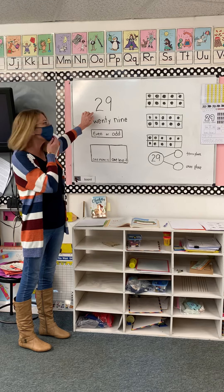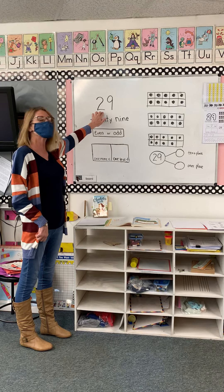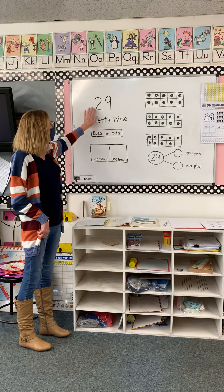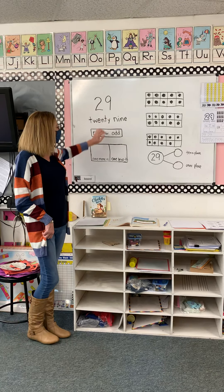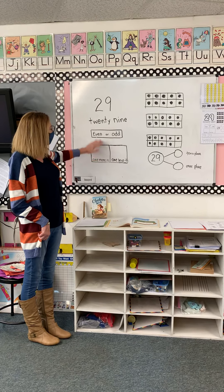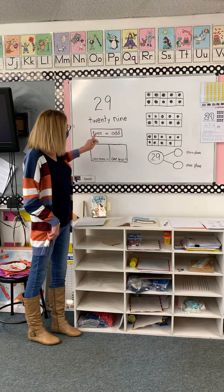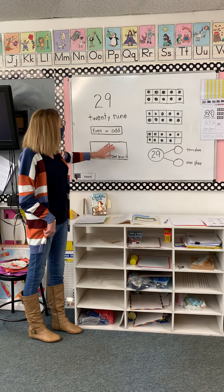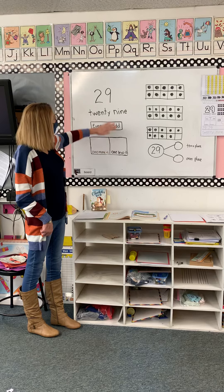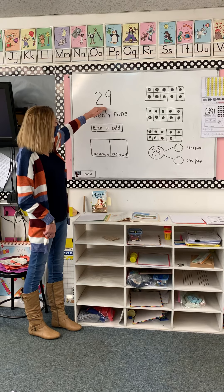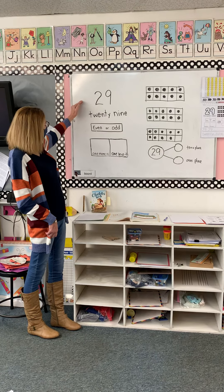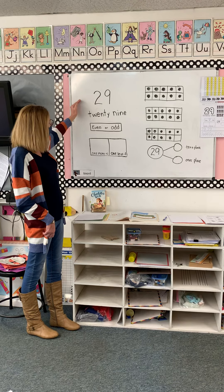One more. Remember, class, that one more is starting at 29, so we are plus one. So if you have 29, you're going to give me the number that comes after 29. One more, plus. We want to look back at 29 again, and you're going to go one less. So we're at 29 and we're subtracting, taking away one less.